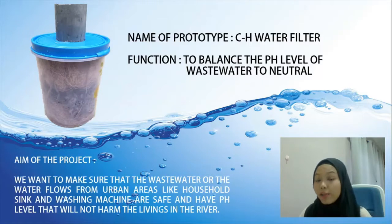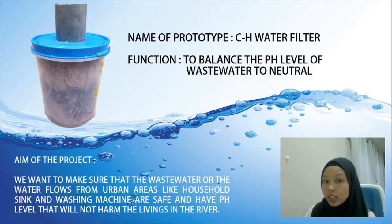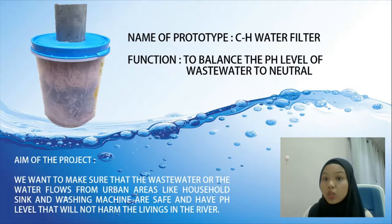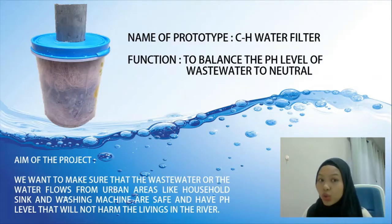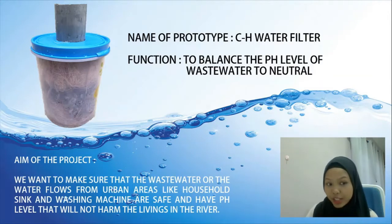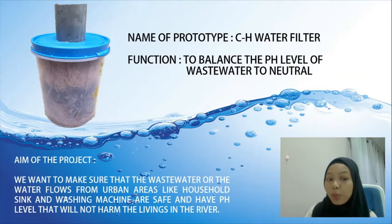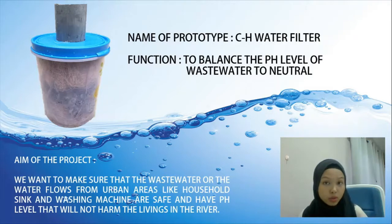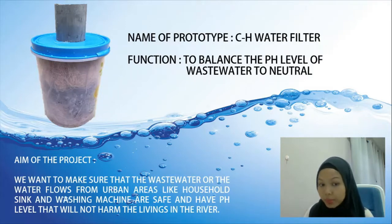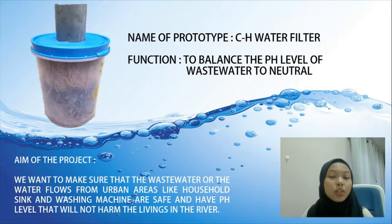Acidic wastewater that flows into the river can actually harm living things such as fish and plankton. So I came up with an idea to create a CH water filter which is to balance the pH level of wastewater to neutral. The aim of the project is to make sure that wastewater flowing from urban areas like household sinks and washing machines is safe and has a pH level that will not harm living things in the water.